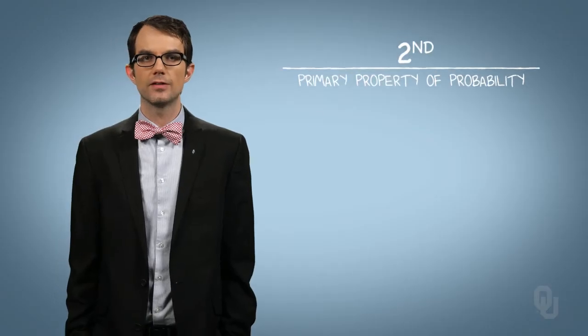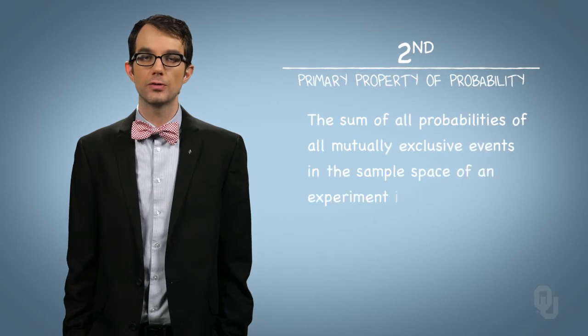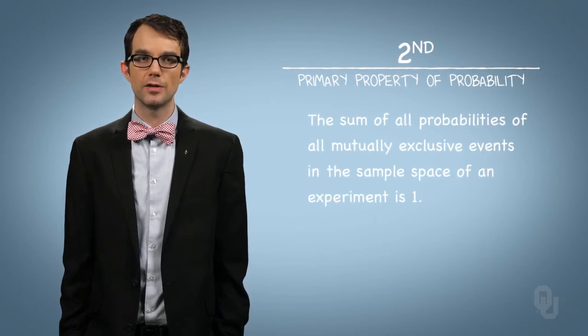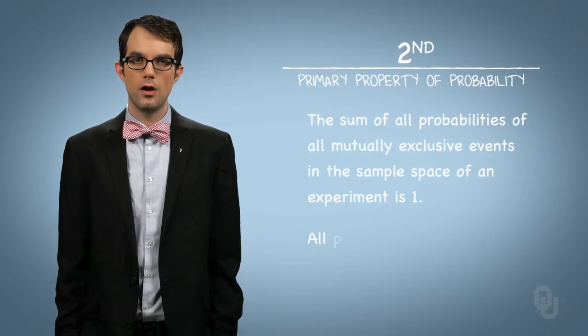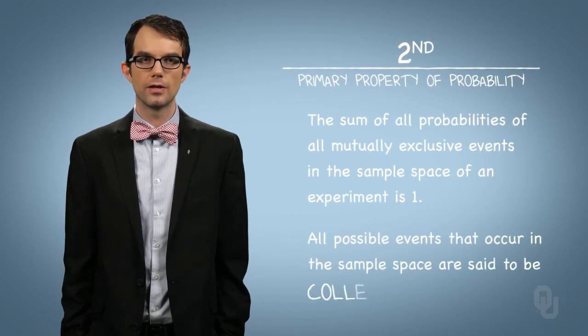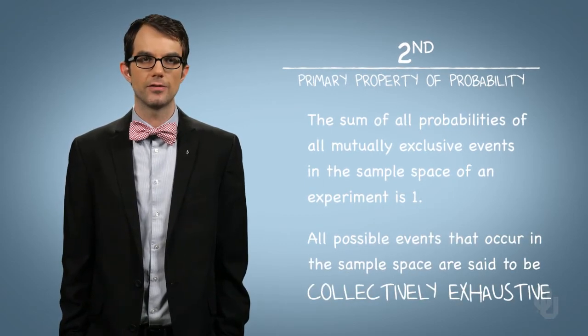The second property is that the sum of all probabilities of all mutually exclusive events in the sample space of an experiment is 1. All possible events that could occur in the sample space are said to be collectively exhaustive.